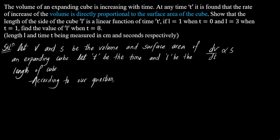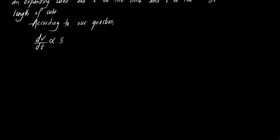According to the question, volume is directly proportional to the surface area. So dV/dt is directly proportional to the surface area. Replacing the proportionality symbol: dV/dt = k times S, where k is the proportionality constant.